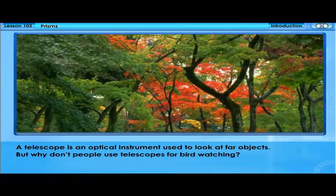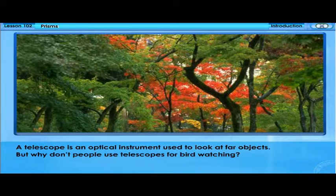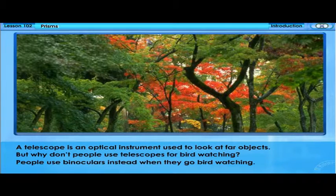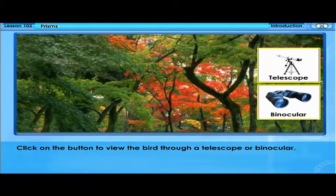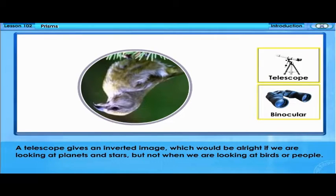A telescope is an optical instrument used to look at far objects. But why don't people use telescopes for bird watching? People use binoculars instead when they go bird watching. A telescope gives an inverted image, which would be alright if we are looking at planets and stars, but not when we are looking at birds or people.